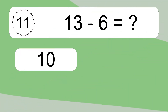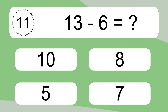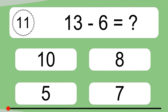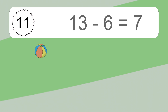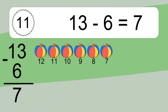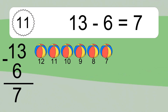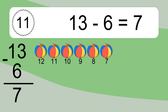13 minus 6 equals what? 13 minus 6 equals 7. Let's count it: 12, 11, 10, 9, 8, 7.